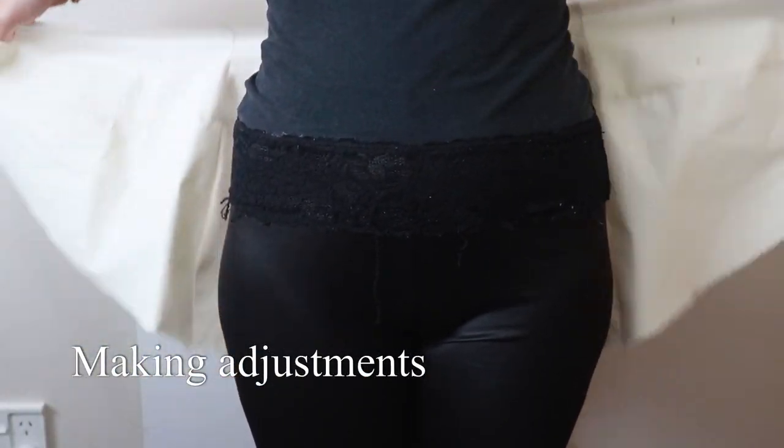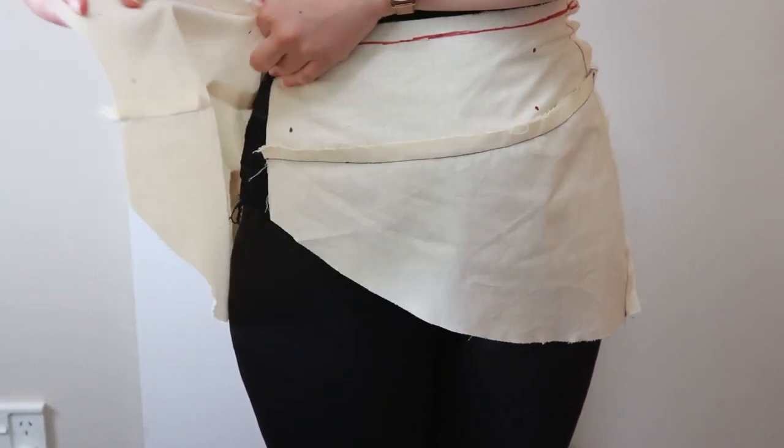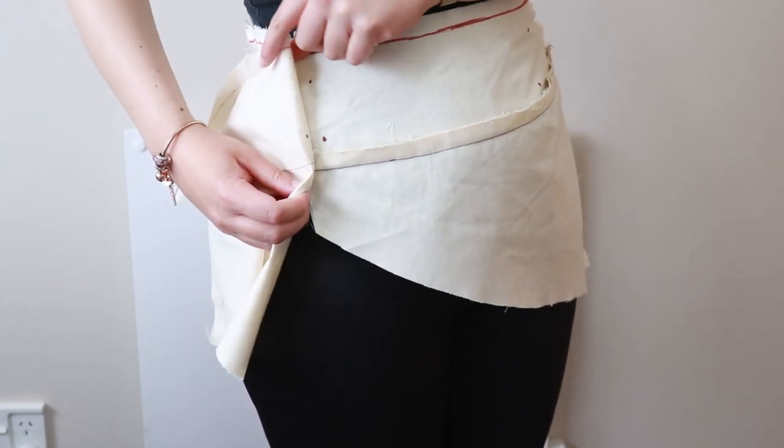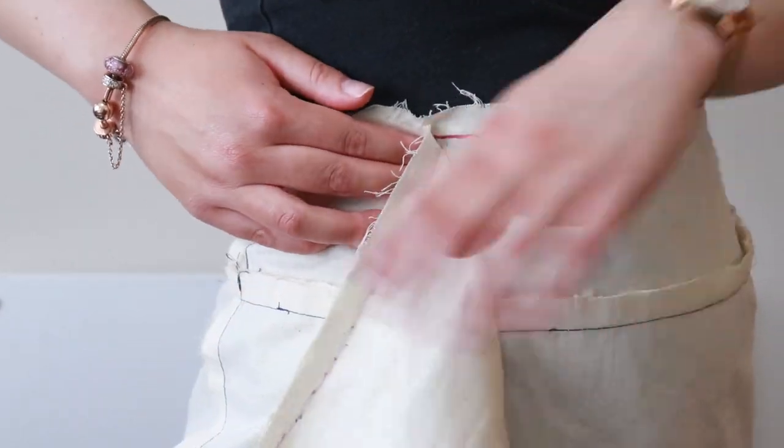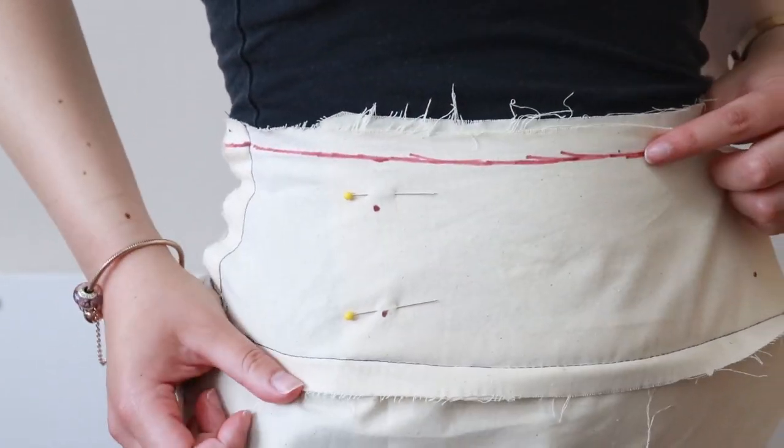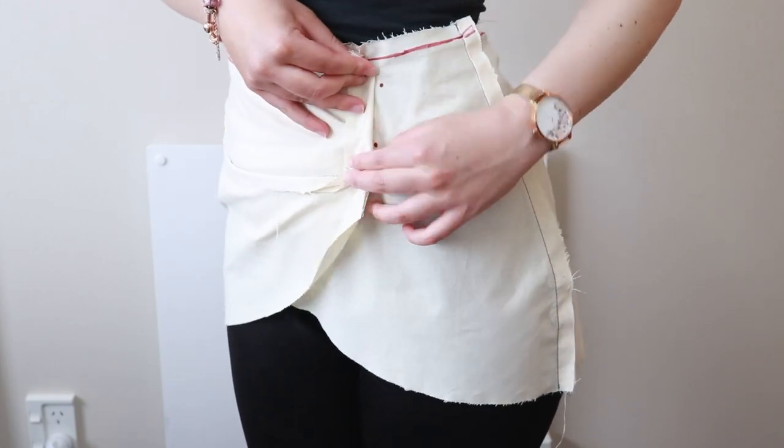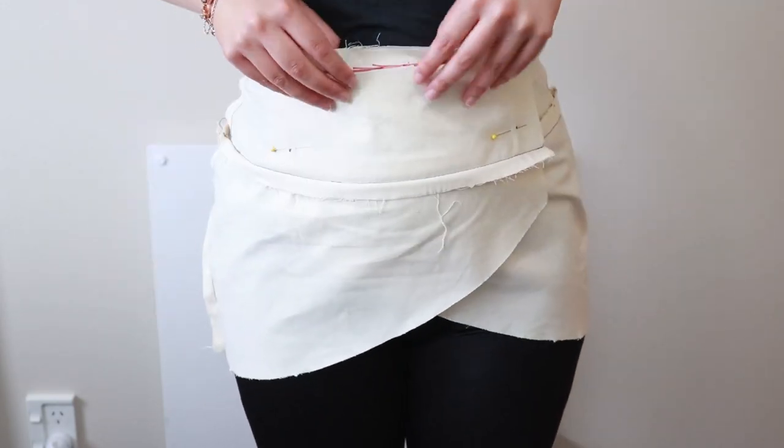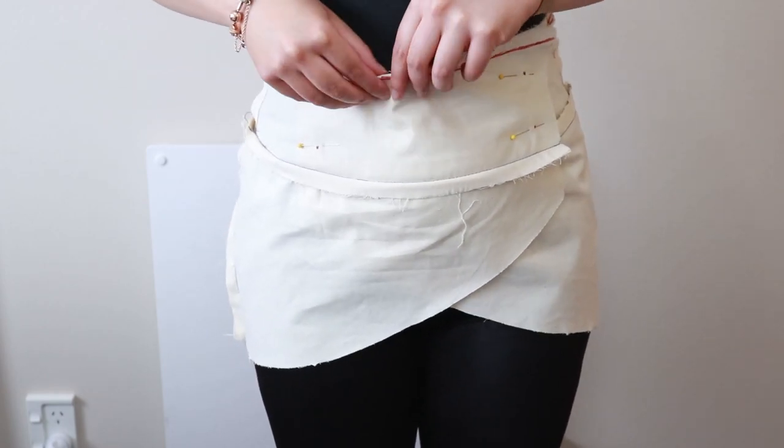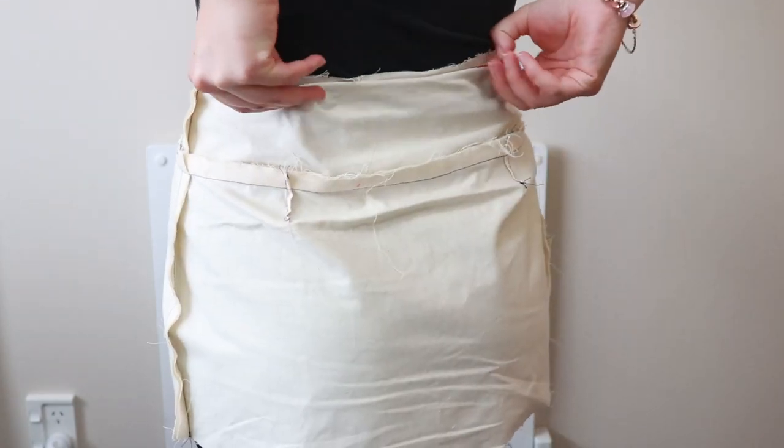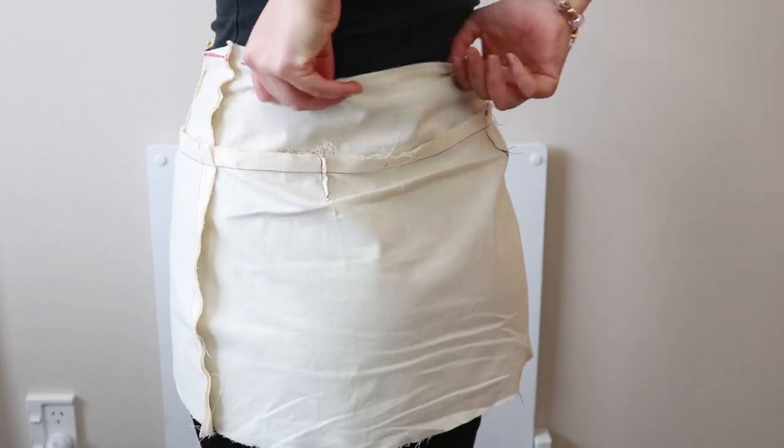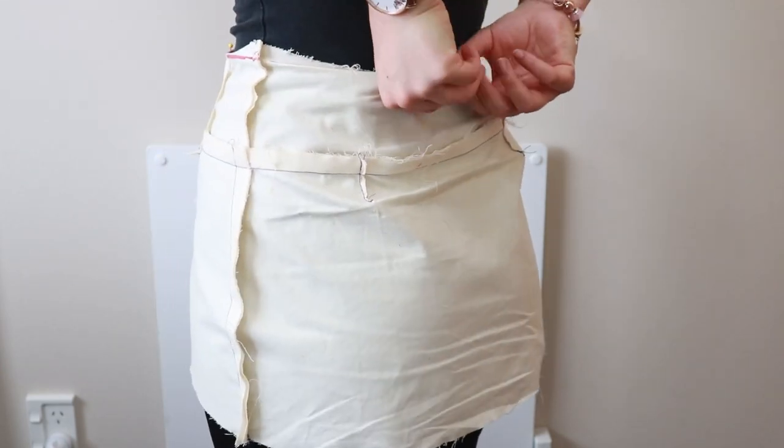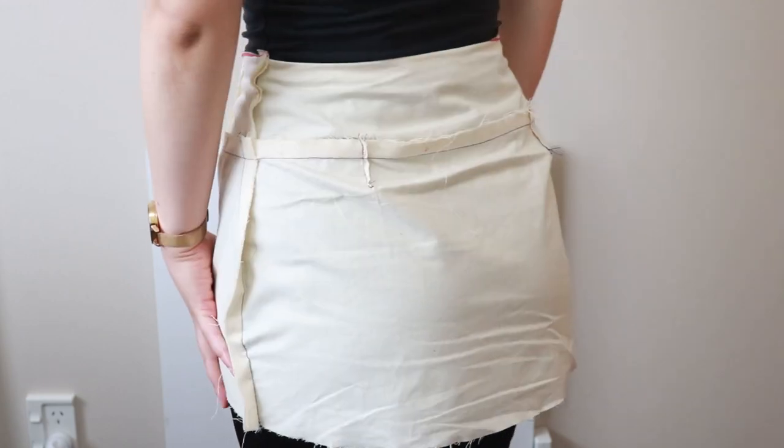Let's try the toile on. Wrap the toile around your hips, with the left side of the skirt going over the top of the right hand side. Bring the first line of dot markings together and pin the two layers. Bring the other set of the dots together and pin. If you haven't folded away the seam allowance at the top, do this now and pin. You can see that I have a few minor fitting issues.